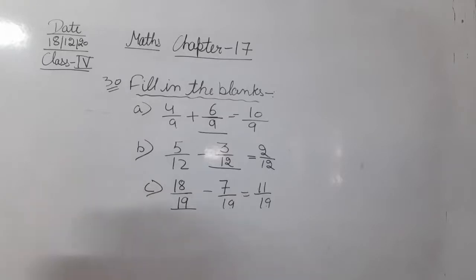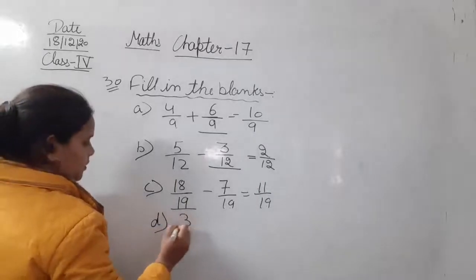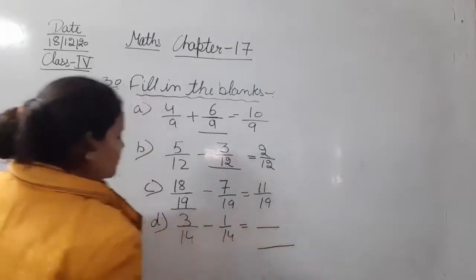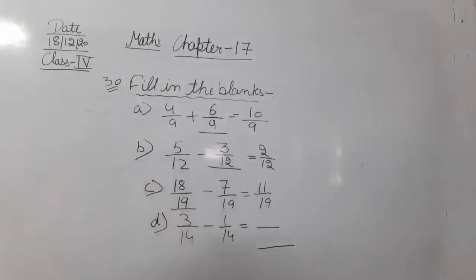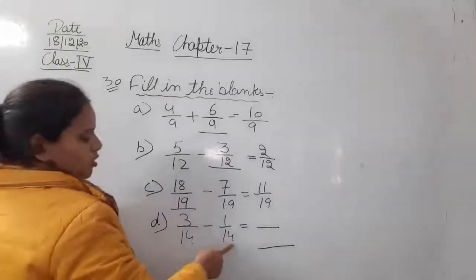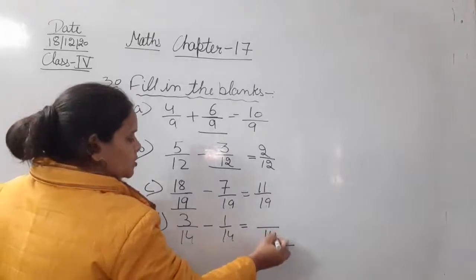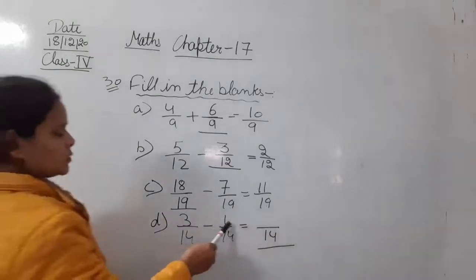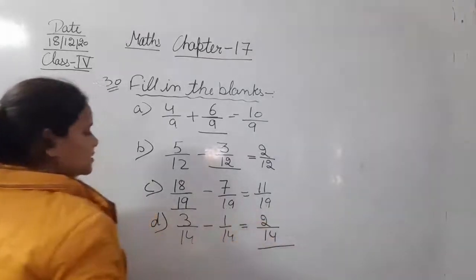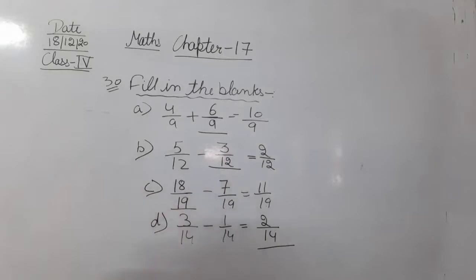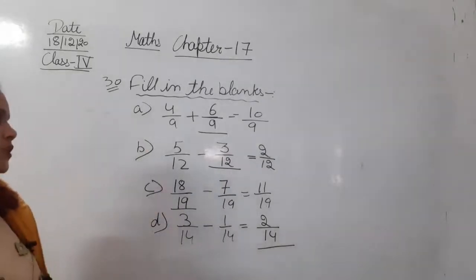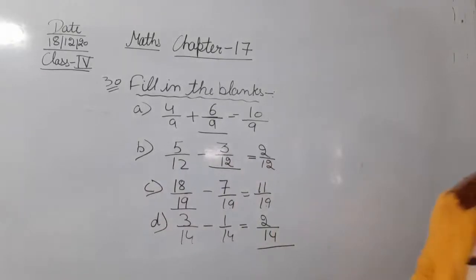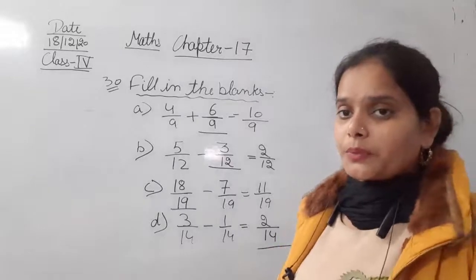Moving next to part D. That is: 3 upon 14 minus 1 upon 14 is equal to what? The denominators of both are the same, so we have common denominator 14. Now subtract: 3 minus 1 is 2. So the answer is 2 upon 14. That is the solution of question number 30 from chapter number 17. You can pause your video here and note it down in your notebooks.